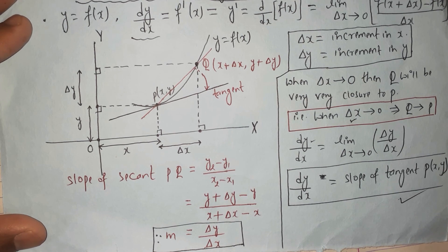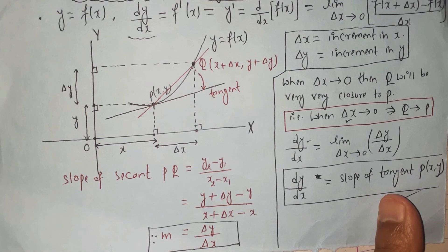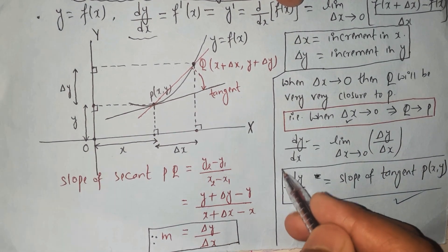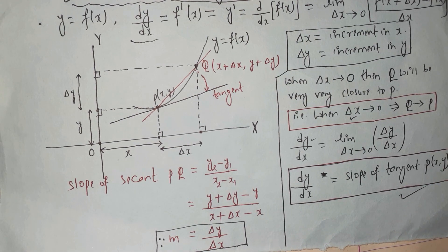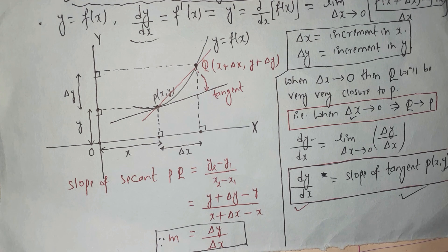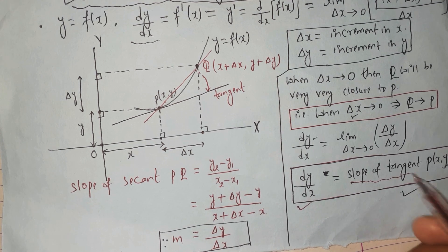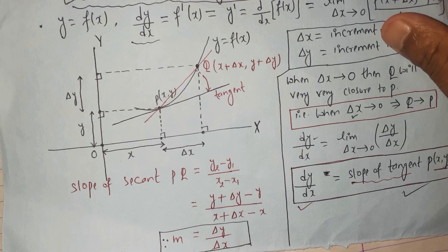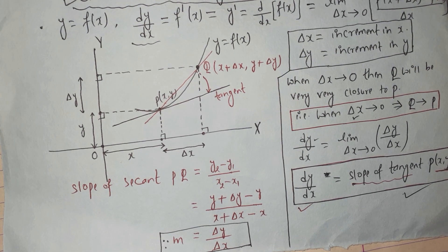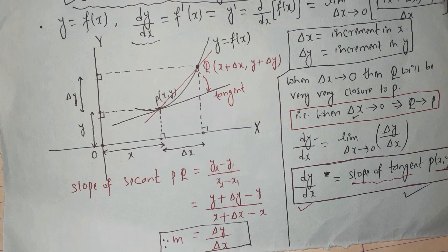This is the geometrical interpretation for the derivative of a function at a particular point. We derived this interpretation using the graph. Please remember this very important point: the derivative of a function always gives the slope of the tangent at the point (x, y). dy/dx gives the slope of the tangent at the point (x, y). In our next video we will discuss more about the derivative and how to calculate the derivative of any function using the sum rules. Thank you so much for today — please keep watching and keep loving this channel.